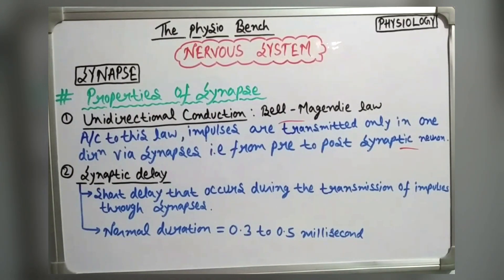The second property is synaptic delay. This is a short delay in the transmission of impulses through synapses. The normal duration is 0.3 to 0.5 milliseconds.